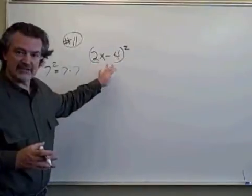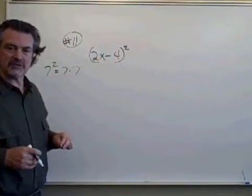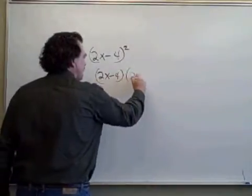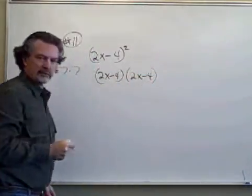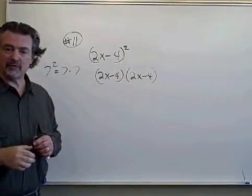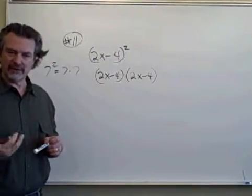That applies even if what we're raising to the second power is a binomial. So we will write the binomial down twice and multiply. And when you have a binomial being multiplied times a binomial, that is the FOIL method again.